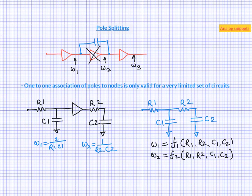For example, if C1 is much bigger than C2, then we can still say that first pole is caused by C1 and so on.